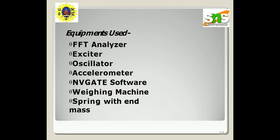The equipment used includes an FFT analyzer, exciter, oscillator, accelerometer, Nvis software, weighing machine, and a spring with mass attachment. Tuned mass dampers are also used in wind turbines. A standard tuned mass damper for wind turbines consists of an auxiliary mass attached to the main structure by means of springs and dashpot elements. The natural frequency of the tuned mass damper is defined by its spring constant and the damping ratio determined by the dashpot. The tuned parameters enable the auxiliary mass to oscillate with a phase shift relative to the motion of the structure. In a typical configuration, an auxiliary mass hangs below the nacelle of a wind turbine, supported by dampers or friction plates.